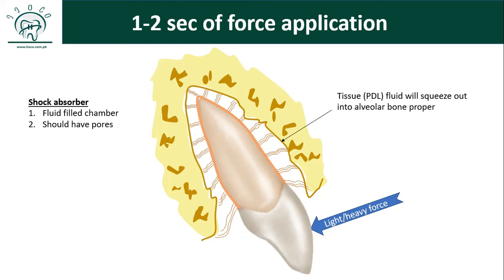Just like cartilage — cartilage is also a shock absorber. Long bones under heavy pressure, like the mandible, are covered with cartilage by nature. When you apply pressure on cartilage, the fluid from the cartilage is released and squeezed out. When the pressure is removed, fluid from the surrounding re-enters the cartilage. In this way, cartilage also acts as a shock absorber, just like PDL.